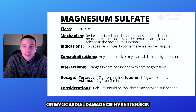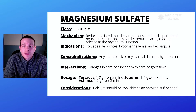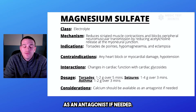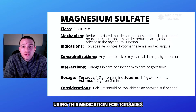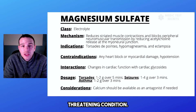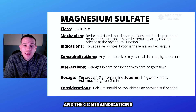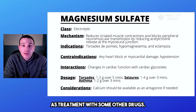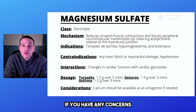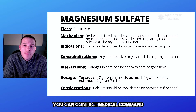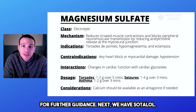Contraindications for magnesium sulfate include heart blocks, myocardial damage, or hypotension. Calcium should be available as an antagonist if needed. If we are using this medication for torsades, it is usually a life-threatening condition, and the considerations and interactions usually aren't as important as treatment. As always, if you have any concerns with the administration of the drug, you can contact Medical Command for further guidance.